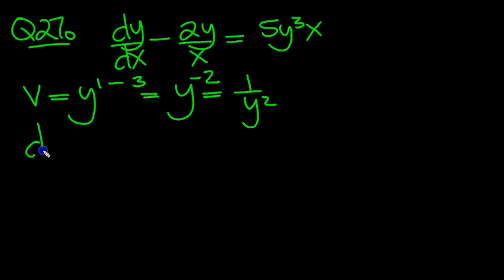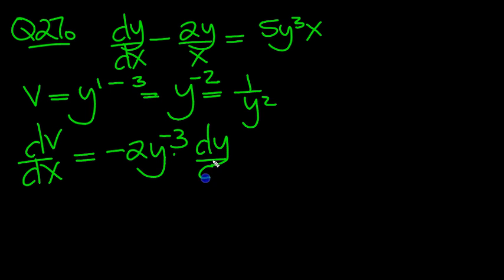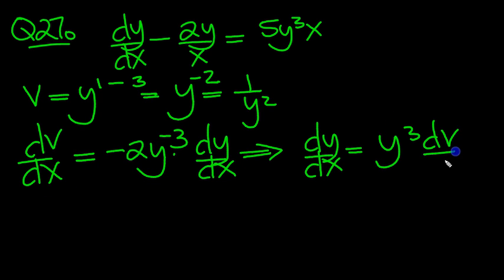So dy/dx then equals minus 2y to the minus 3 multiplied by the function differentiator, which is dy/dx. So rearrange it then for dy/dx. So dy/dx is equal to, this y to the minus 3 is underneath, it comes to be up the top, y cubed, dv/dx.